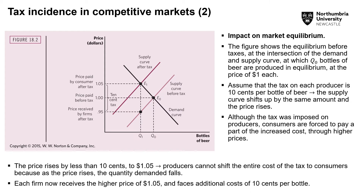When we impose a tax on producers, they face higher costs, resulting in a leftward shift of the supply curve. Imagine the initial price before tax was $1. After tax, consumers pay $1.05. However, because the producer is taxed, we subtract $0.10 from that $1.05, so the price received by firms after tax is $0.95. Consumers pay a higher price of $1.05 and producers receive a lower price of $0.95 — each loses $0.05 relative to the initial price of $1.